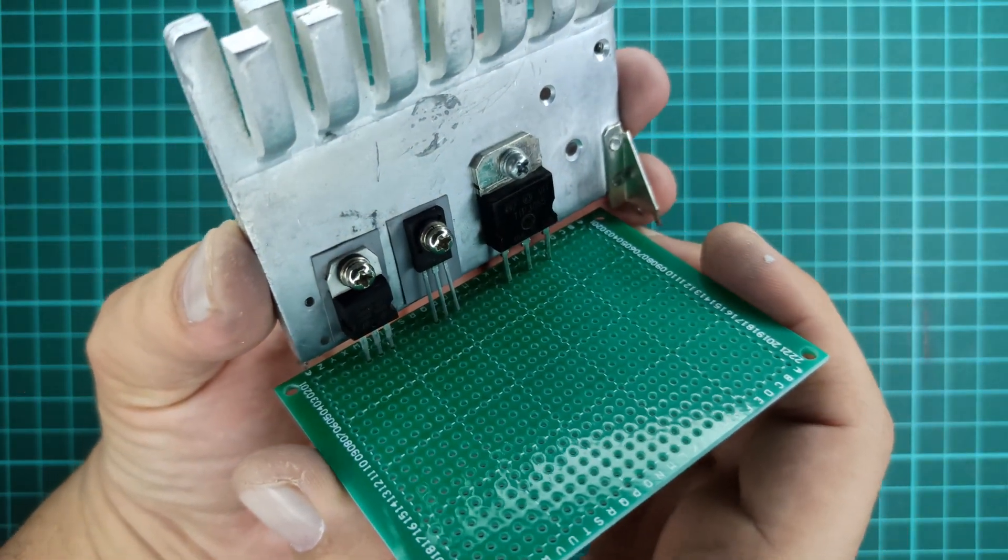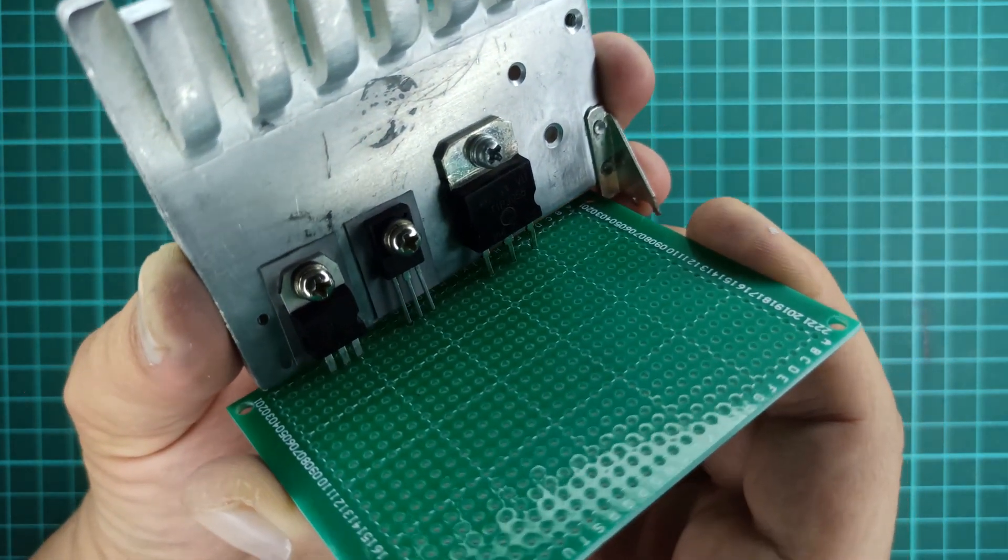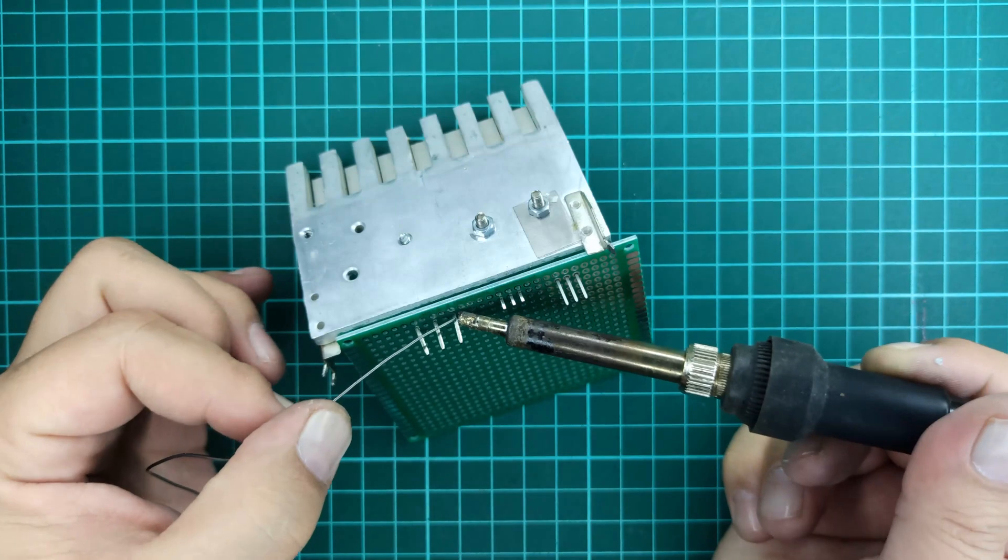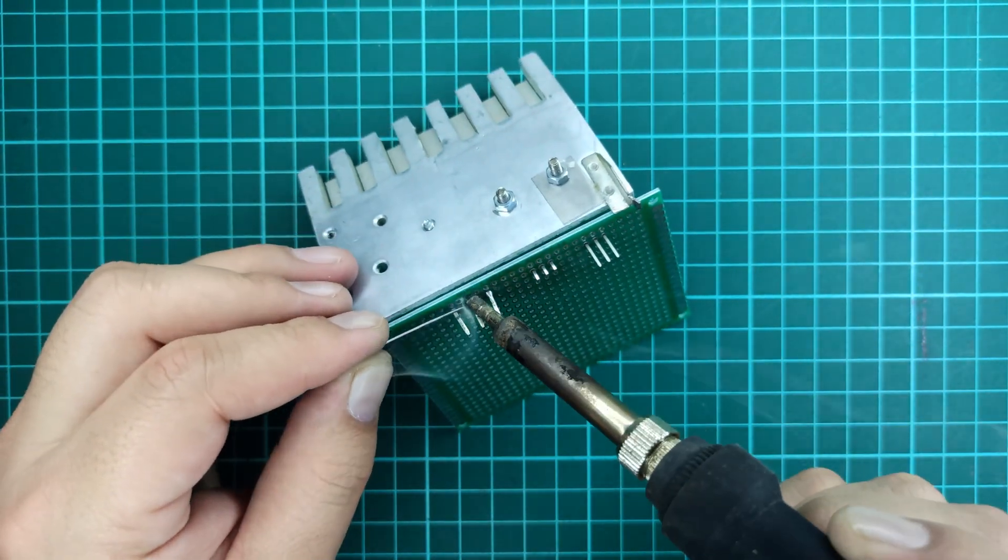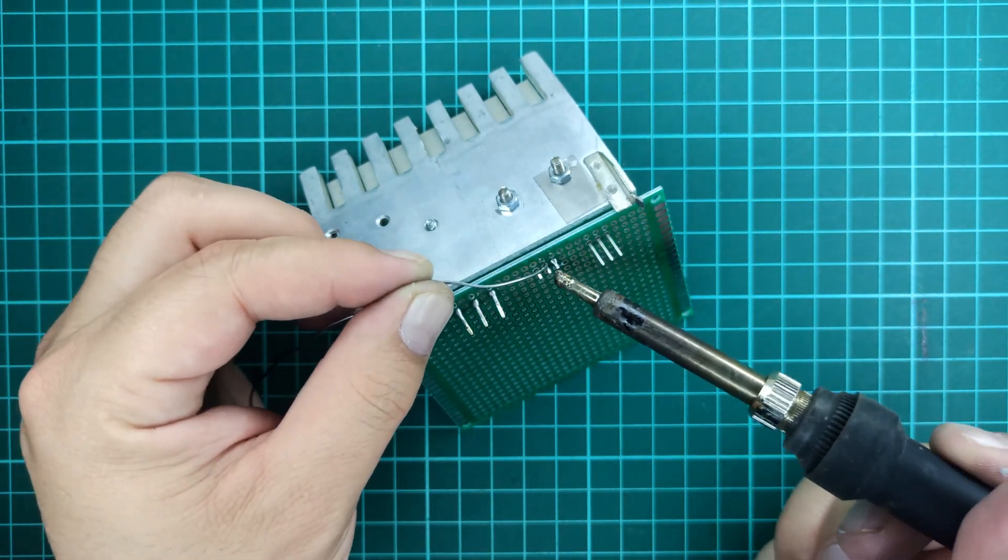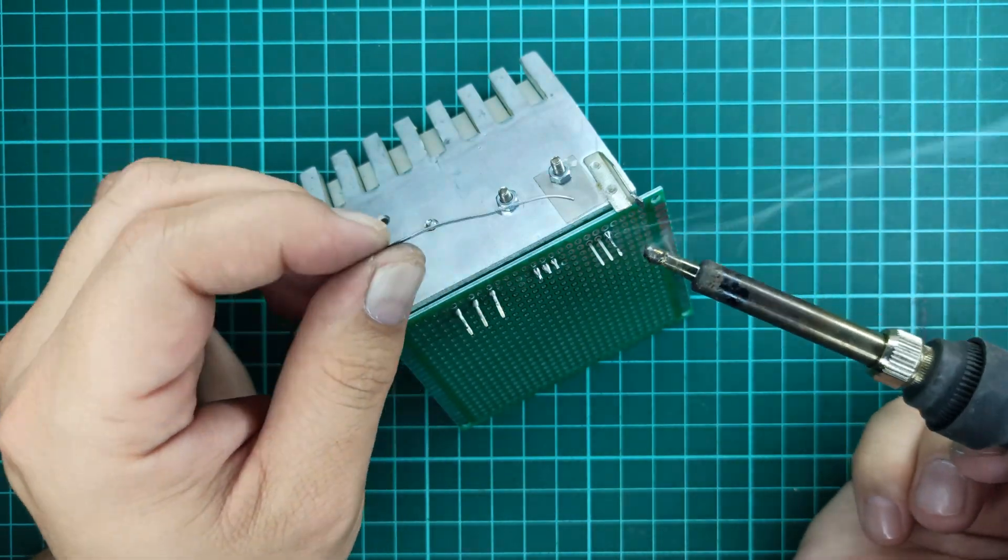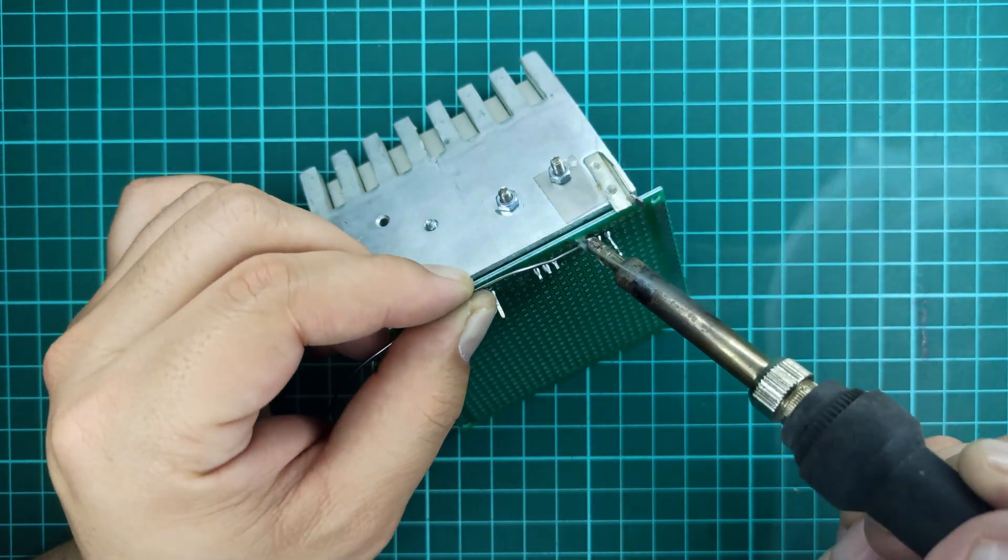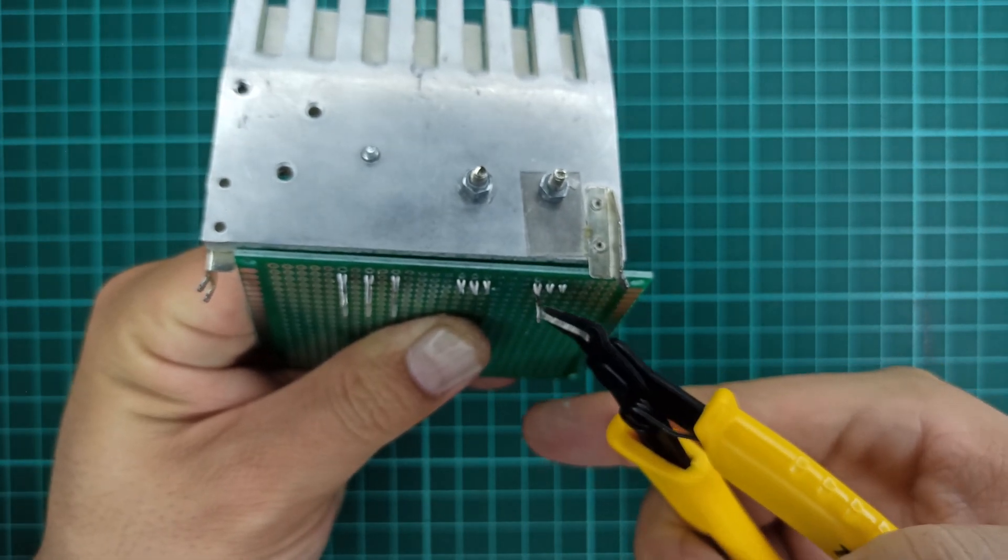Next, take a PCB board and mount these components onto it as shown. With a cutting plier, cut the extra legs of the components soldered.